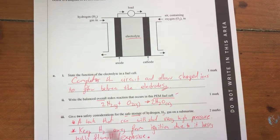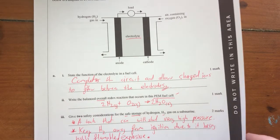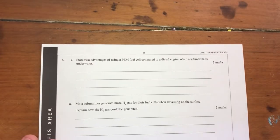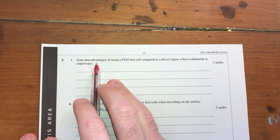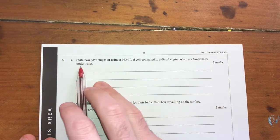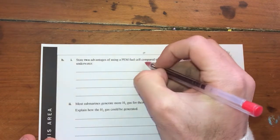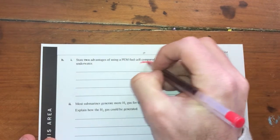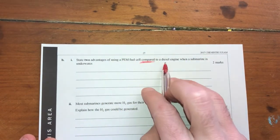Again, two marks. I've used two dot points to indicate the fact that I've got two separate points there as well. Moving on to part B, state two advantages of using a PEM fuel cell compared to a diesel engine when the submarine is underwater. Alright, so we need to be having a comparison. So we need to talk about what the fuel cell does that a diesel engine doesn't do.